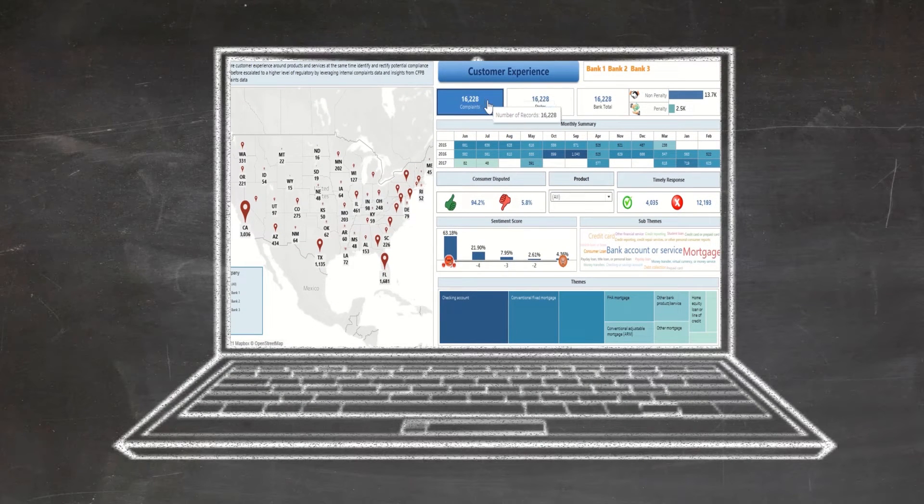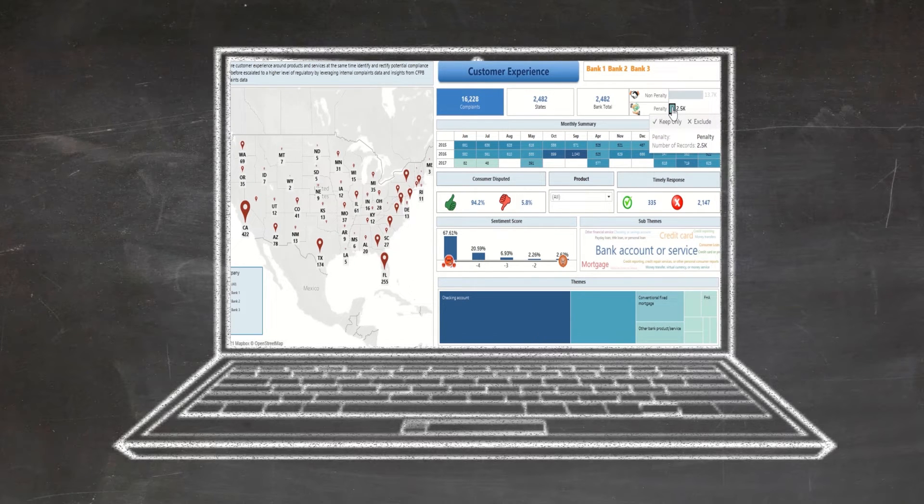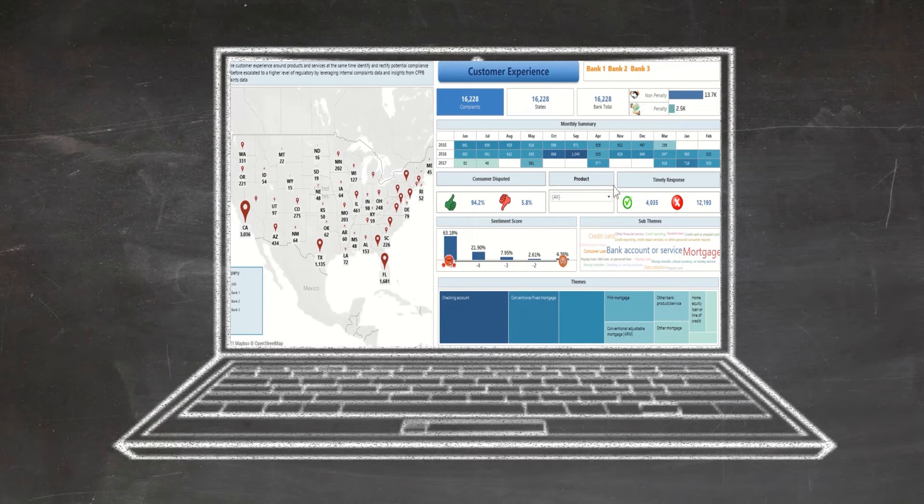Total 16,000+ complaints data is captured and escalated to CFPB against Banks One, Two, and Three. Almost 2,500 complaints led to banks incurring penalties. Further analysis of the data is done based on product offerings, underlying themes and sub-themes extracted from complaints, timely response towards complaint resolution, resolution disputed by the consumer, and geo-split of complaints.